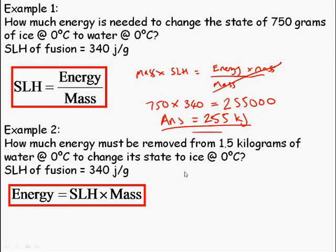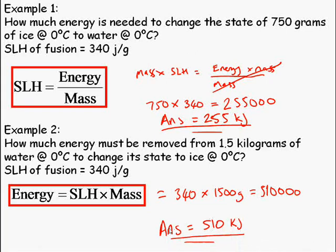And specific latent heat is 340. And the mass, well this is in grams, this is in kilograms. So I shall change this to grams. So 340 times 1,500 gives me 510,000 or 510 kilojoules.